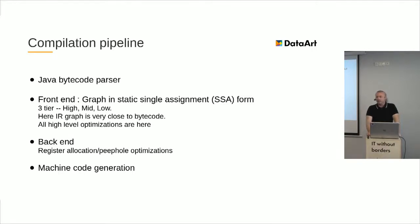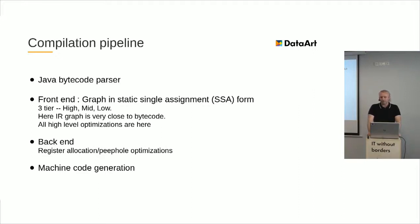Now I'd like to talk about the compilation pipeline and what components it consists of. There are four big phases. First is a Java bytecode parser, which reads an array of bytecode bytes and translates it into a special graph. This graph has a special form called static single assignment form. A lot of compilers — not only JIT compilers — use one of two representations: continuation passing style or static single assignment form. Many optimizations are interchangeable between these two forms.